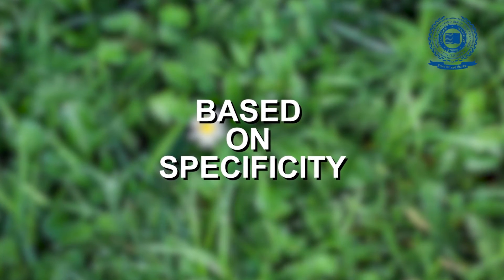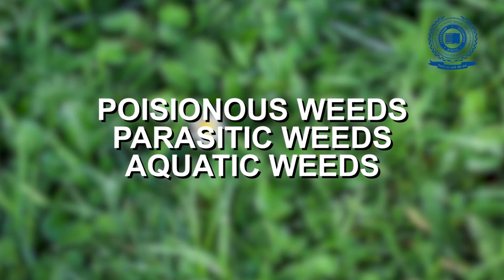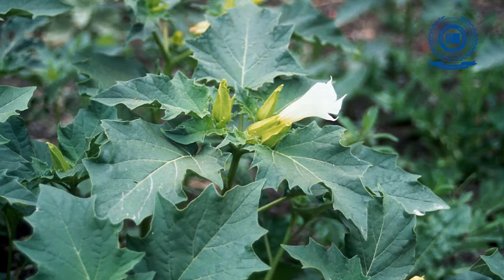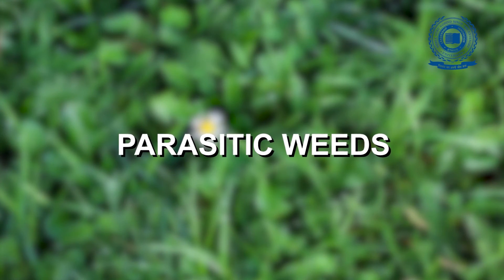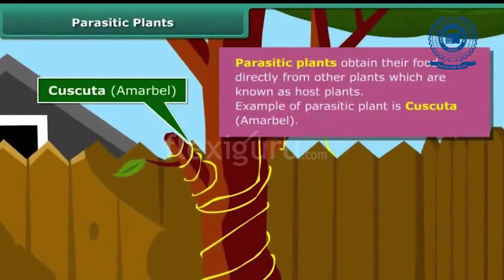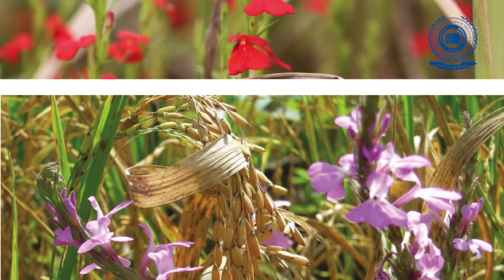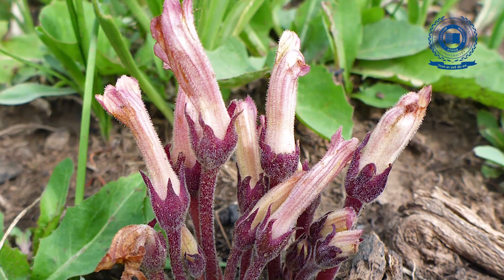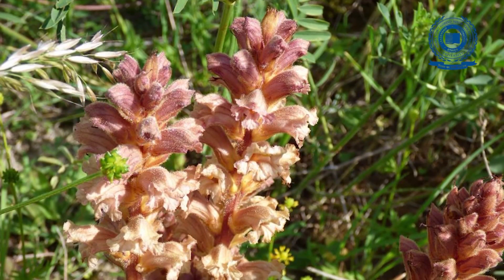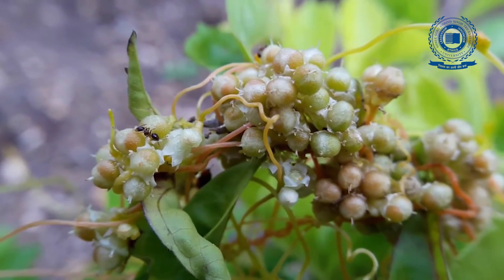Based on specificity: besides the various classes of weeds, a few others deserve special attention — they are poisonous weeds, parasitic weeds, and aquatic weeds. Poisonous weeds cause ailment in livestock resulting in death and great loss. Example: Datura. Parasitic weeds are either total or partial — total parasites depend completely on host plants, while partial parasites depend on host plants for minerals but are capable of producing their own food. Example: total root parasite — Orobanche on tobacco; partial root parasite — Striga on sugarcane and sorghum; total stem parasite — Cuscuta on lucerne and onion; partial stem parasite — Loranthus on mango and other trees.